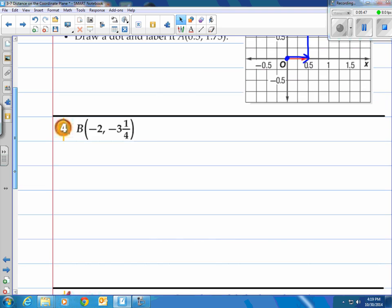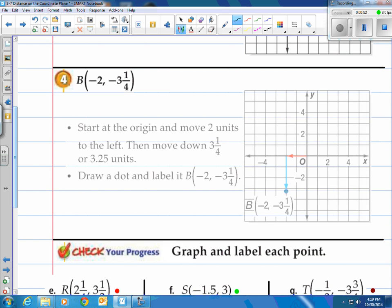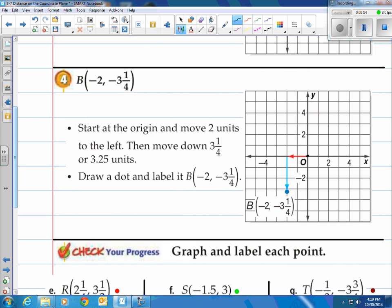Look at B, or number four. Same kind of thing. They start at the origin, right here. Then they move to, on the horizontal axis, they move to negative two. And on this particular graph, that's where negative two is located, right here. And then they go down three and a fourth, just a little bit past this three right here. There's negative three, so they went a little bit below. That's negative three and a fourth. And then they labeled it with B.